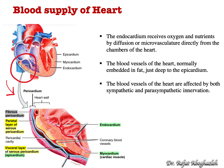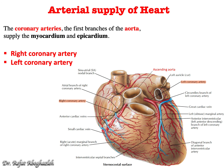To summarize: the endocardium is supplied from the chamber itself either by diffusion or by tiny microvasculature. The myocardium and epicardium are supplied by the coronary arteries, which are embedded in the fatty tissue just beneath the visceral layer of serous pericardium.